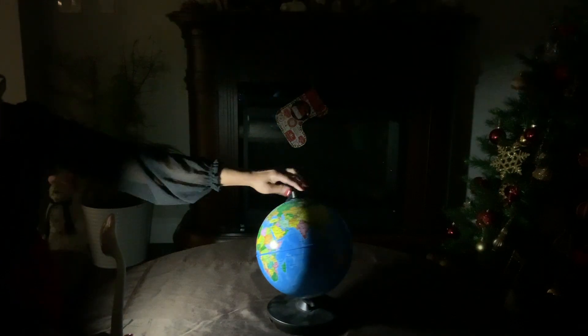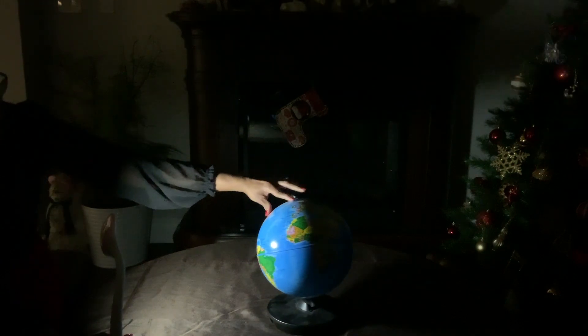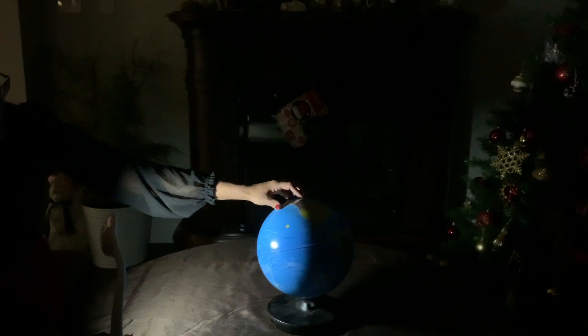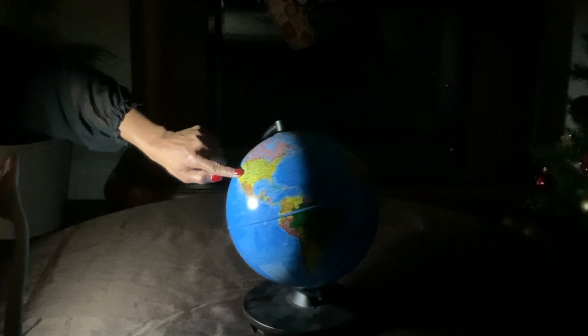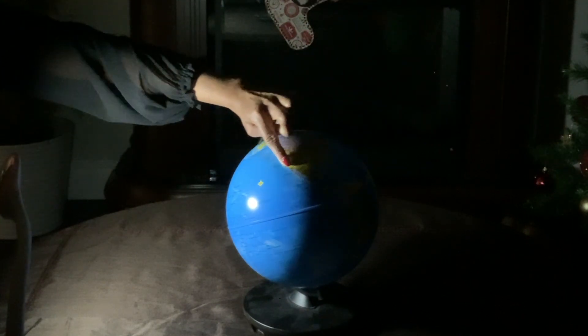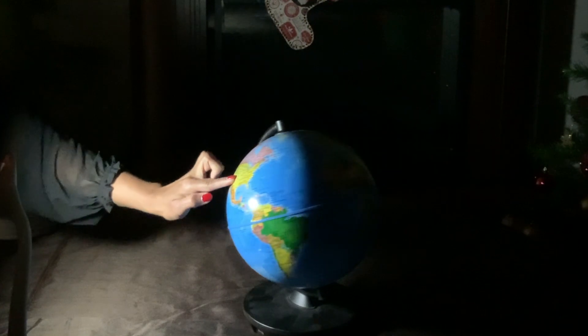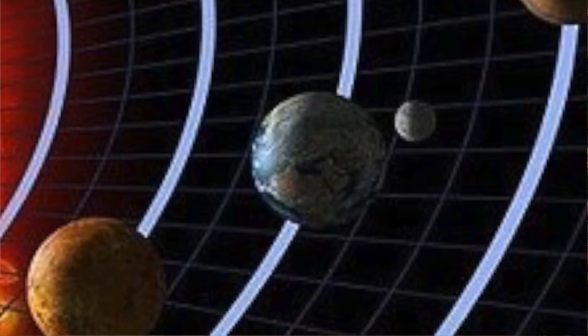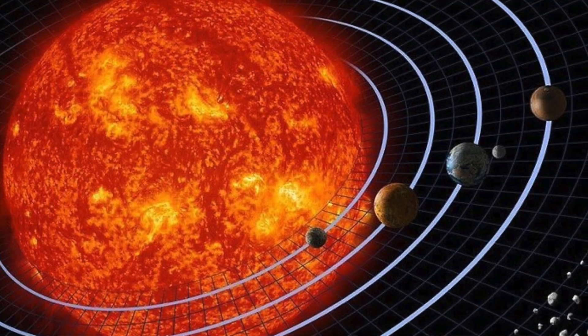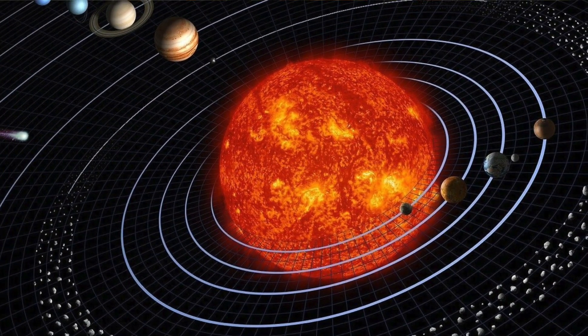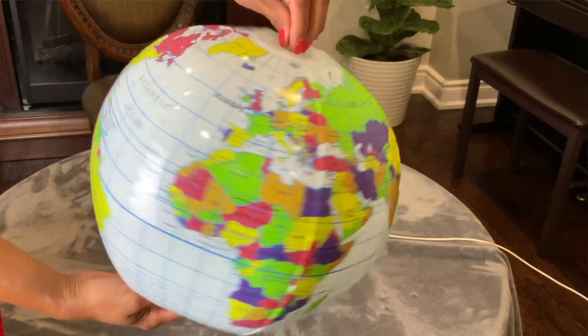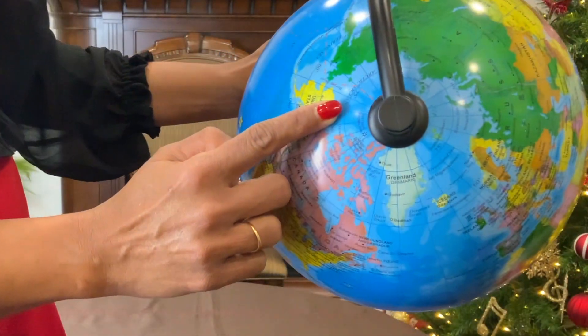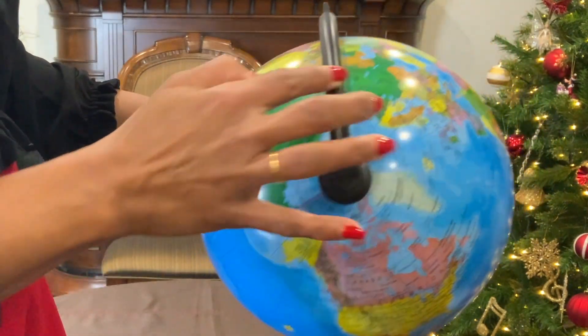It takes 24 hours for the earth to make a full rotation. This is called a day, even though it includes one daytime and one nighttime together. So the sun doesn't move at all, even though it seems like it's moving when you see it from the earth. That's because of the earth's rotation. When seen from the top, the earth rotates anticlockwise.